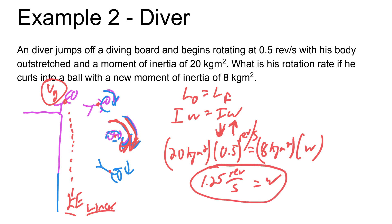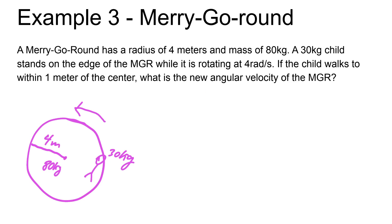Let's move on to the final question, the merry-go-round problem. We have a merry-go-round rotating at a rate of 4 radians per second. Notice this time we are in the radians per second unit. Then we have our kid who's going to stand on the edge and walk towards the center. Predict conceptually what should happen. We use the equation L initial equals L final, or I omega initial equals I omega final.